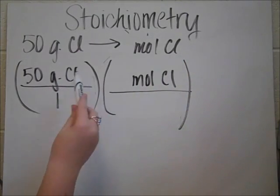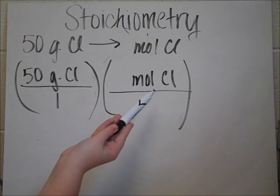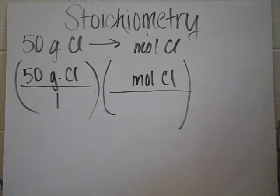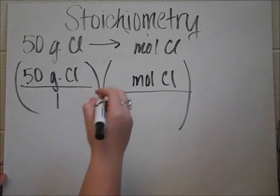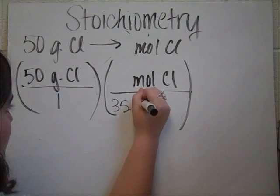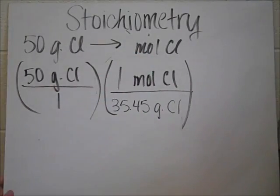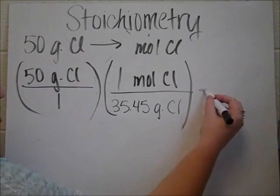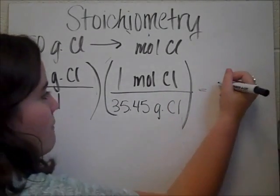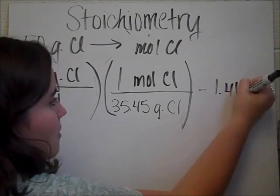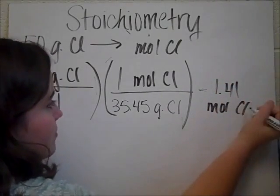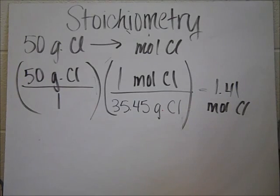But we need a conversion factor to go from grams to moles. So when you're dealing with weight, you have to go to your periodic table and find the molar mass of the certain element that you're looking at. In this case, the molar mass for chlorine is 35.45 grams, and that equals 1 mole of chlorine. And then if you figure it out on your calculator, you'll find that it's 1.41 moles of chlorine. And that was your second problem.